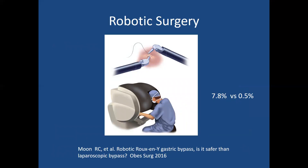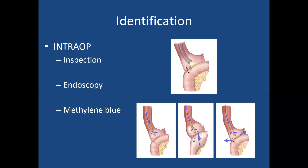As robotic surgery has become more popular for bariatric surgery, some have thought that the hand-sewn anastomosis done robotically may have lower leaks. One study by Moon in 2016 showed the initial learning curve of robotic surgery produced a 7.8% leak rate, compared to laparoscopic which was 0.5%. The key is first to ensure there's no technical failure. We need to identify and prove that our anastomosis is as good as we want it to be — either by visual inspection laparoscopically or by endoscopy intraluminally.